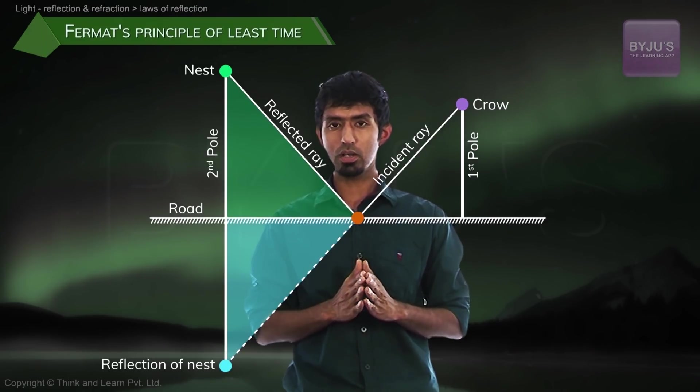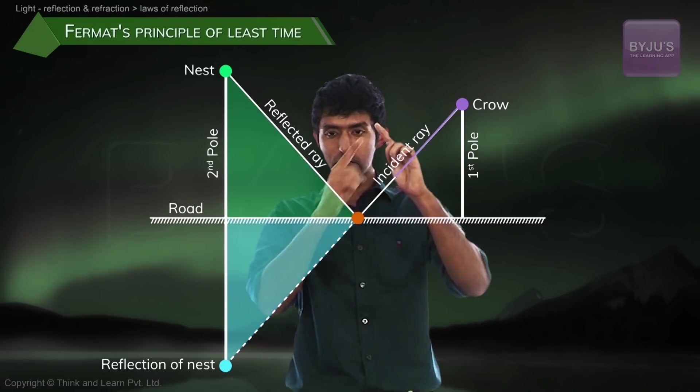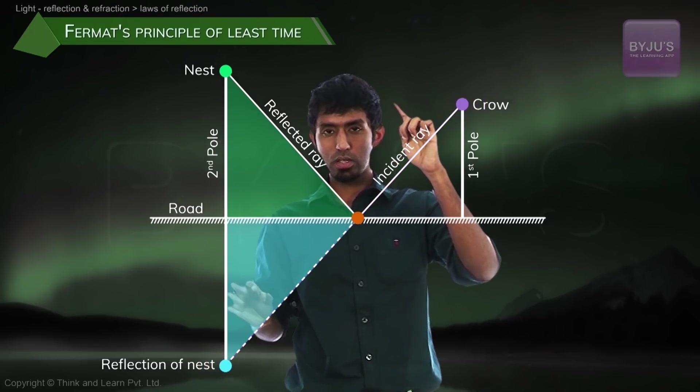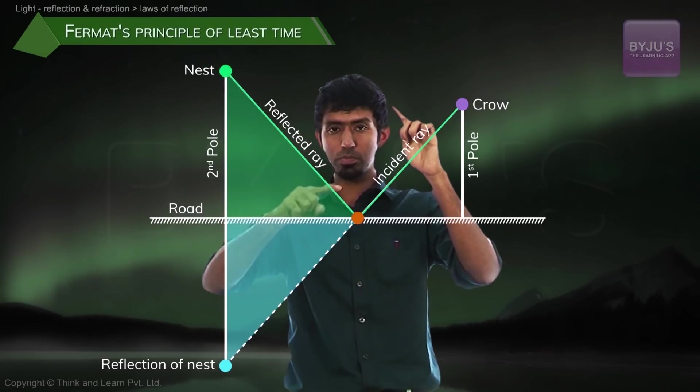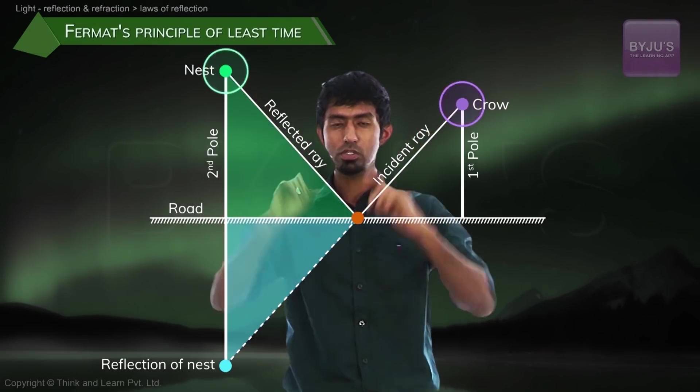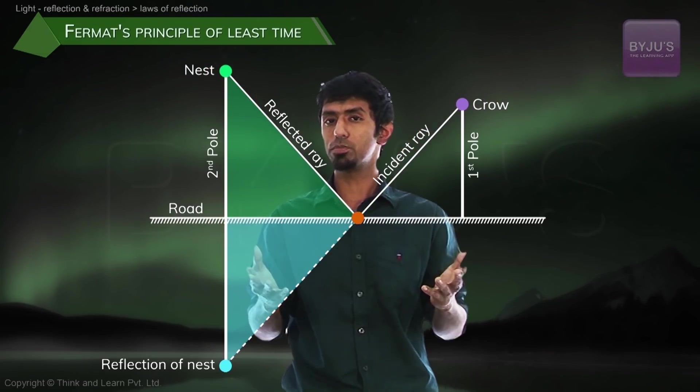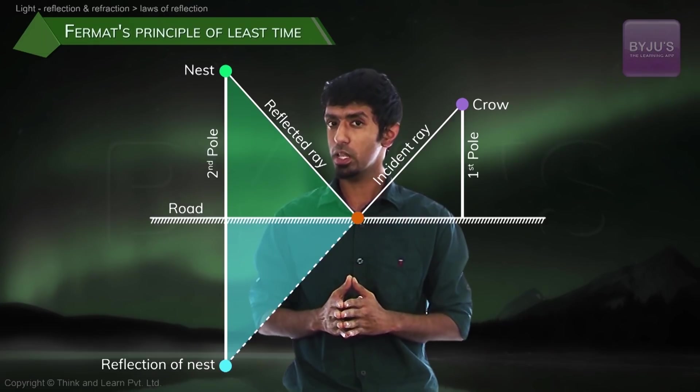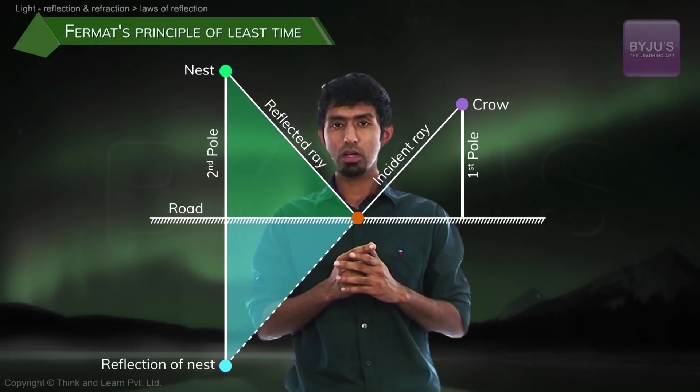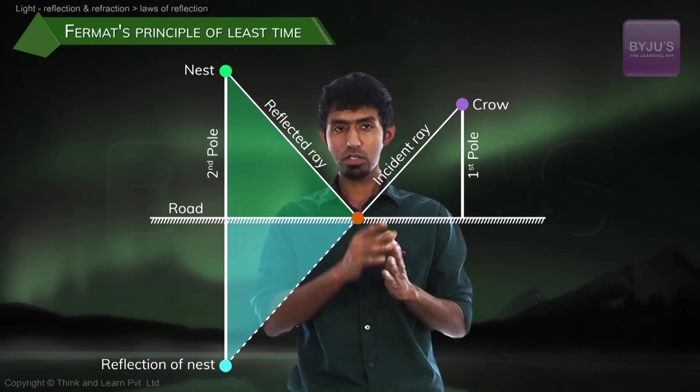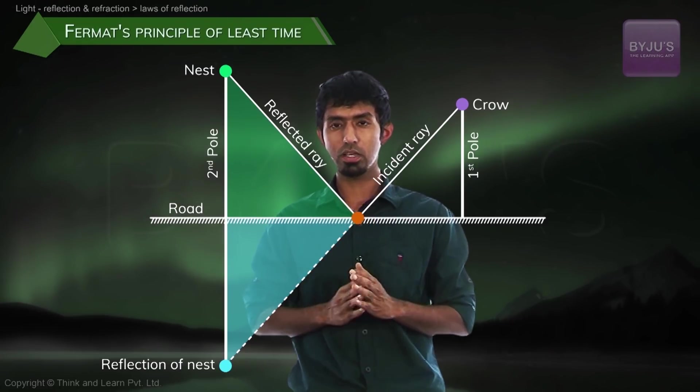Because these two triangles now are similar, which means that if that is the shortest path between these two points, then the exact reflection back must be the shortest path between these two poles, which is what we're trying to find. Because in this case, the shortest path is the quickest path as well. So where will it intersect? Where will the crow catch the mouse? The point where that line intersects the road, like you can see.